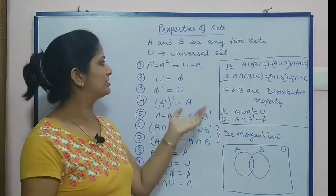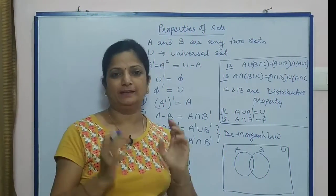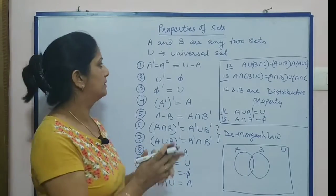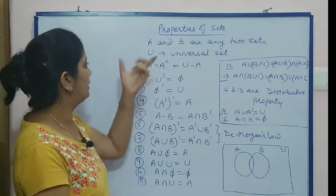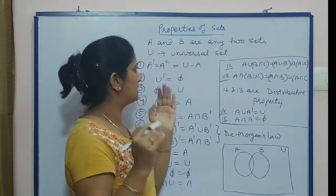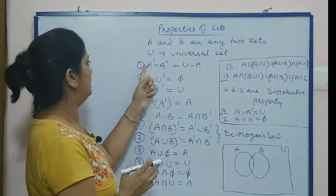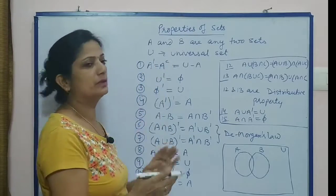Hi guys, welcome again to my channel Crackboard 1920. Today we are discussing the properties of sets. The main properties are: when A and B are any two sets and U represents the universal set, then A dash or A complement both